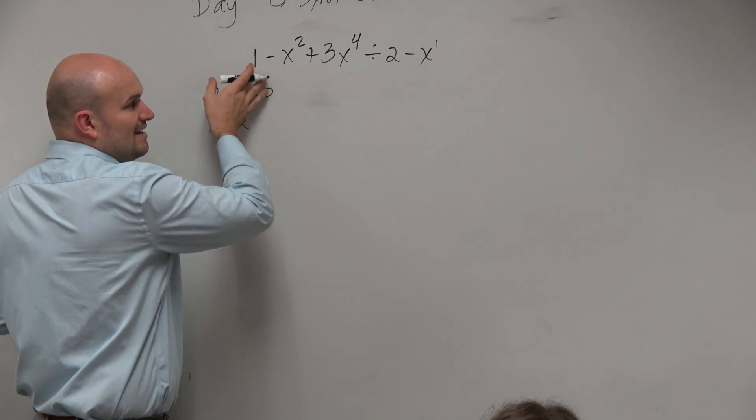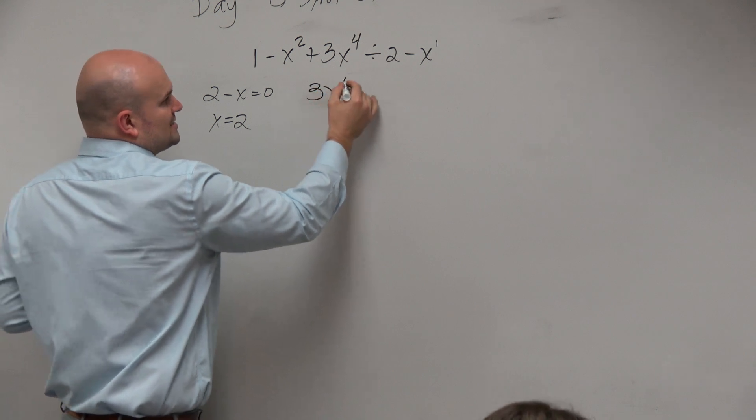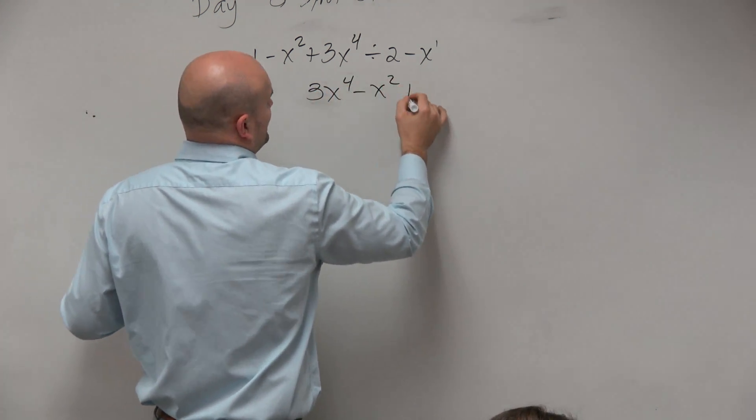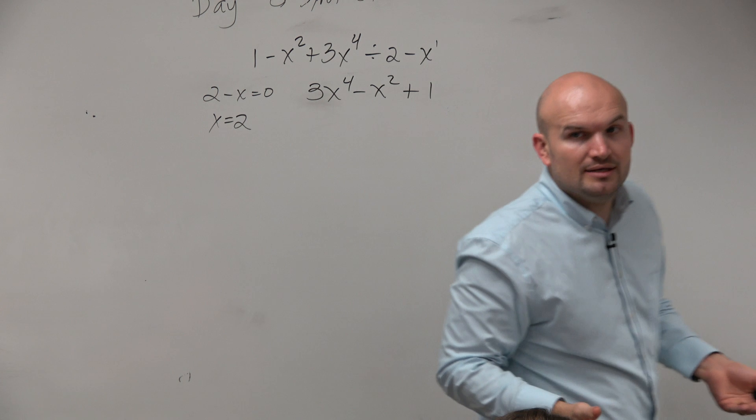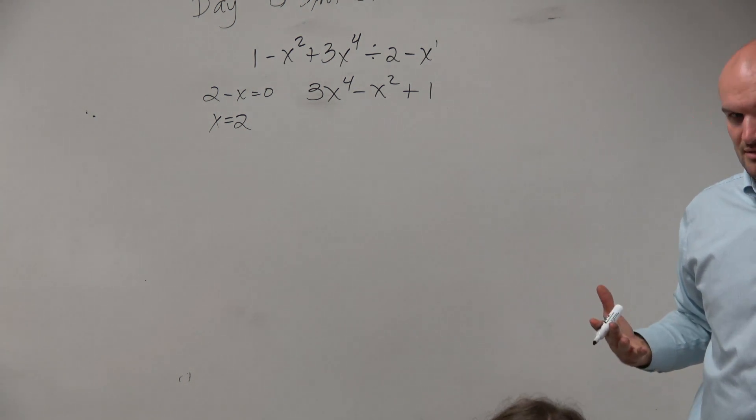Now, we want to make sure we have this in the ascending order. So 3x to the fourth minus x squared plus 1 is all good. But what about x cubed? And what about the x, right?